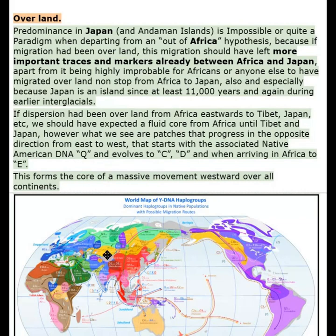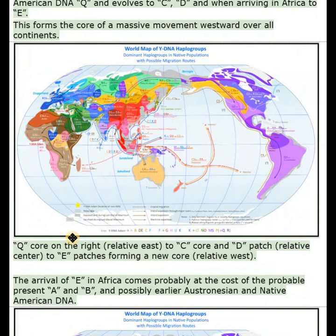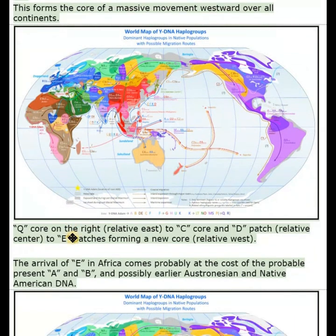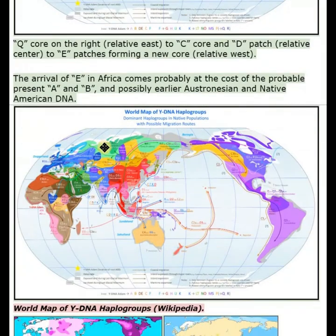This forms the core of a massive movement westward over all continents: a Q core on the relative east, to a C core and D patch in the relative center, to E patches forming a new core in the relative west. The arrival of E in Africa comes probably at the cost of the probable present A and B, and possibly earlier Austronesian and Native American DNA.